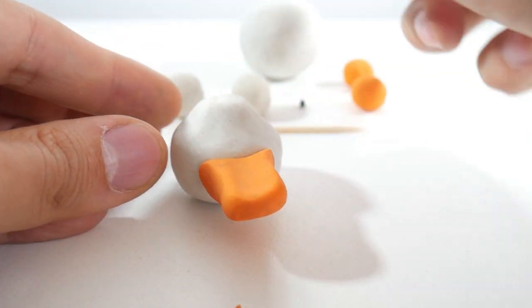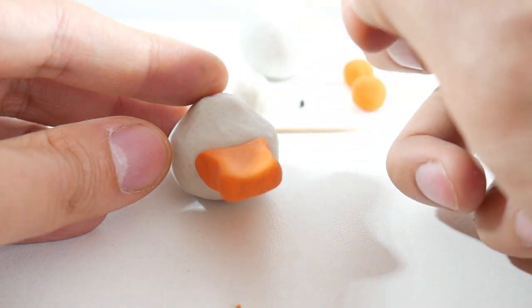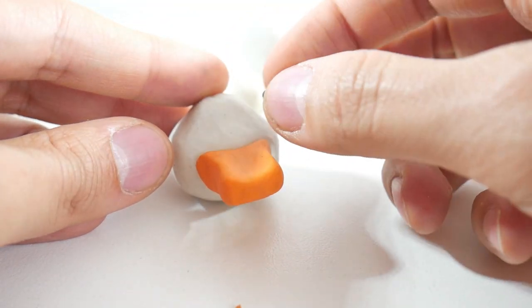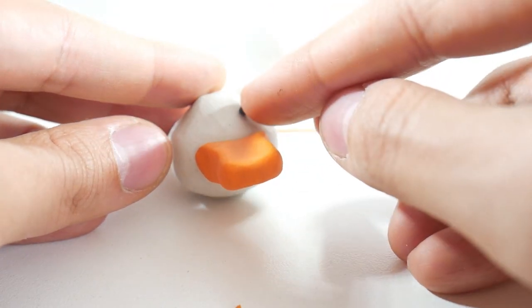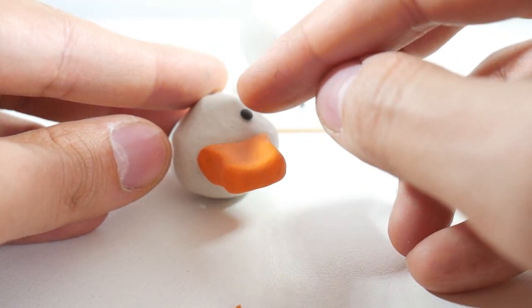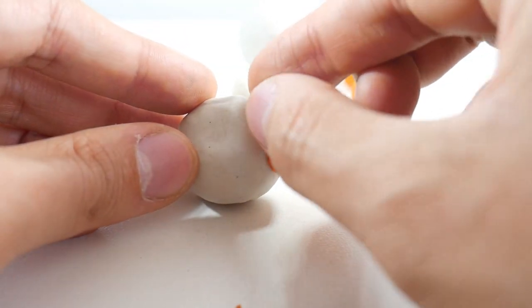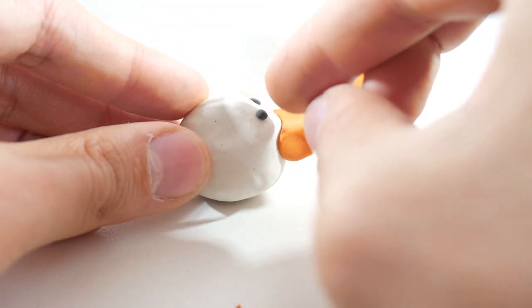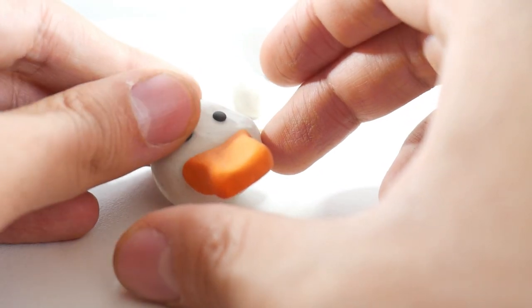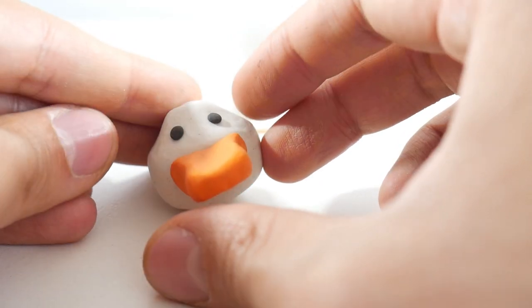For the eyes, take two small balls of black clay and place them above the beak on the face. We're starting to see our duck come to life.